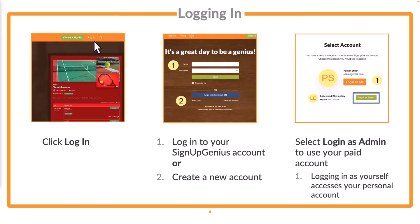You'll go to signupgenius.com and click log in. If you already have a free account using that same email address, you can log in with those credentials. If you don't have an account, just click new account and register. After logging in, you will have two options: log in as me or log in as admin. When you choose log in as me, that is your personal free Sign-Up Genius account. You can log in there to see items you've signed up for or past sign-ups you've created.